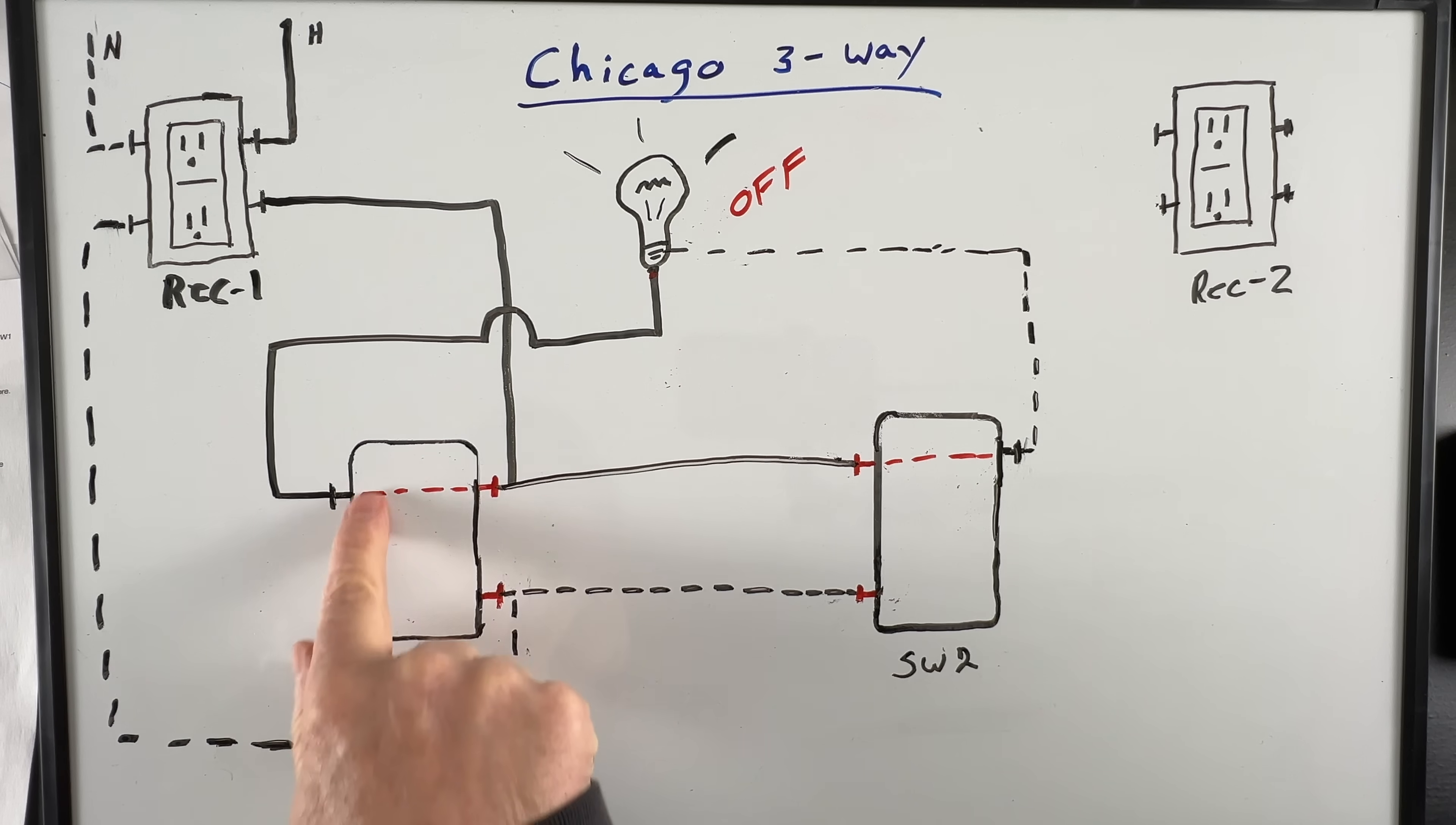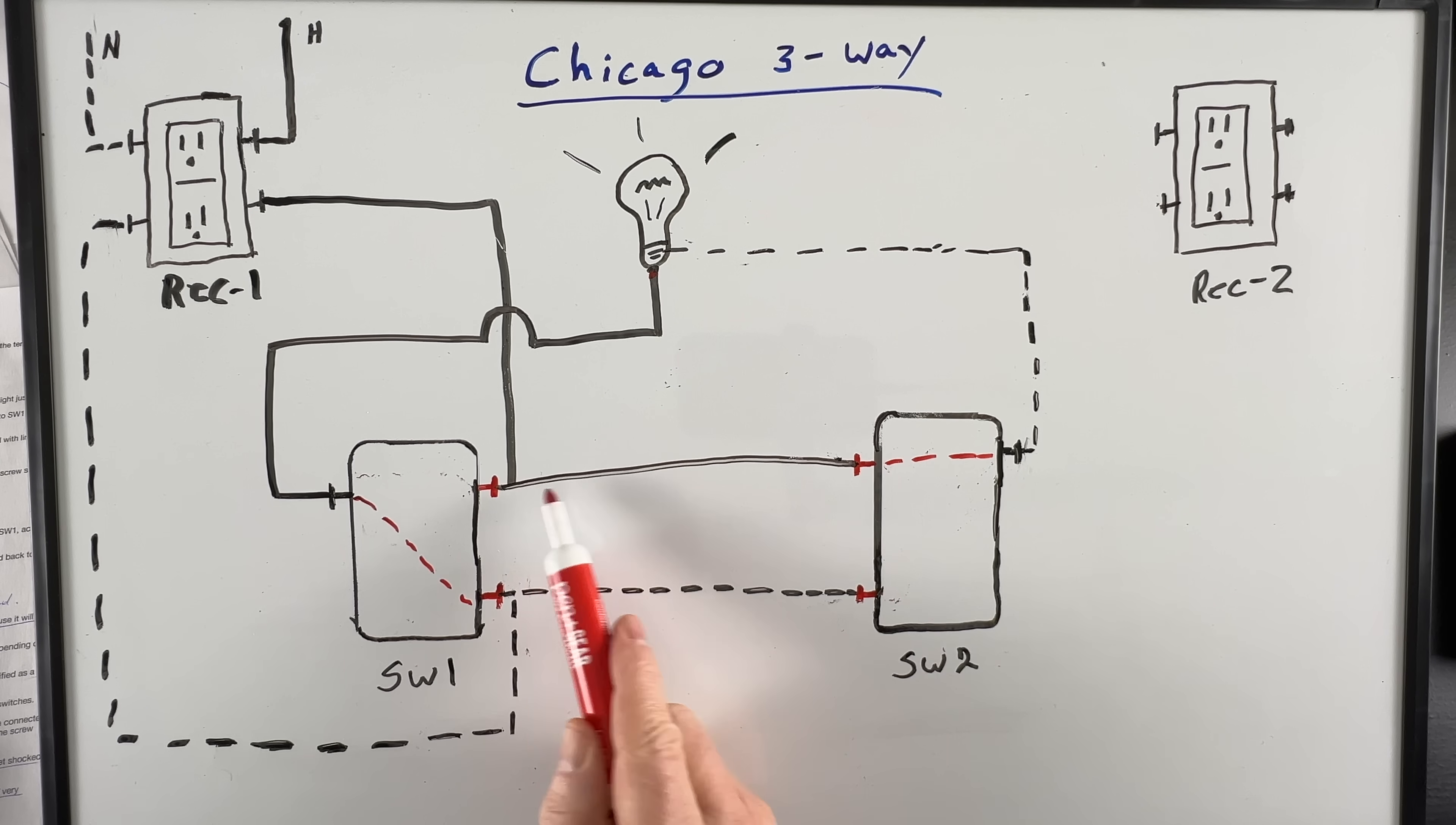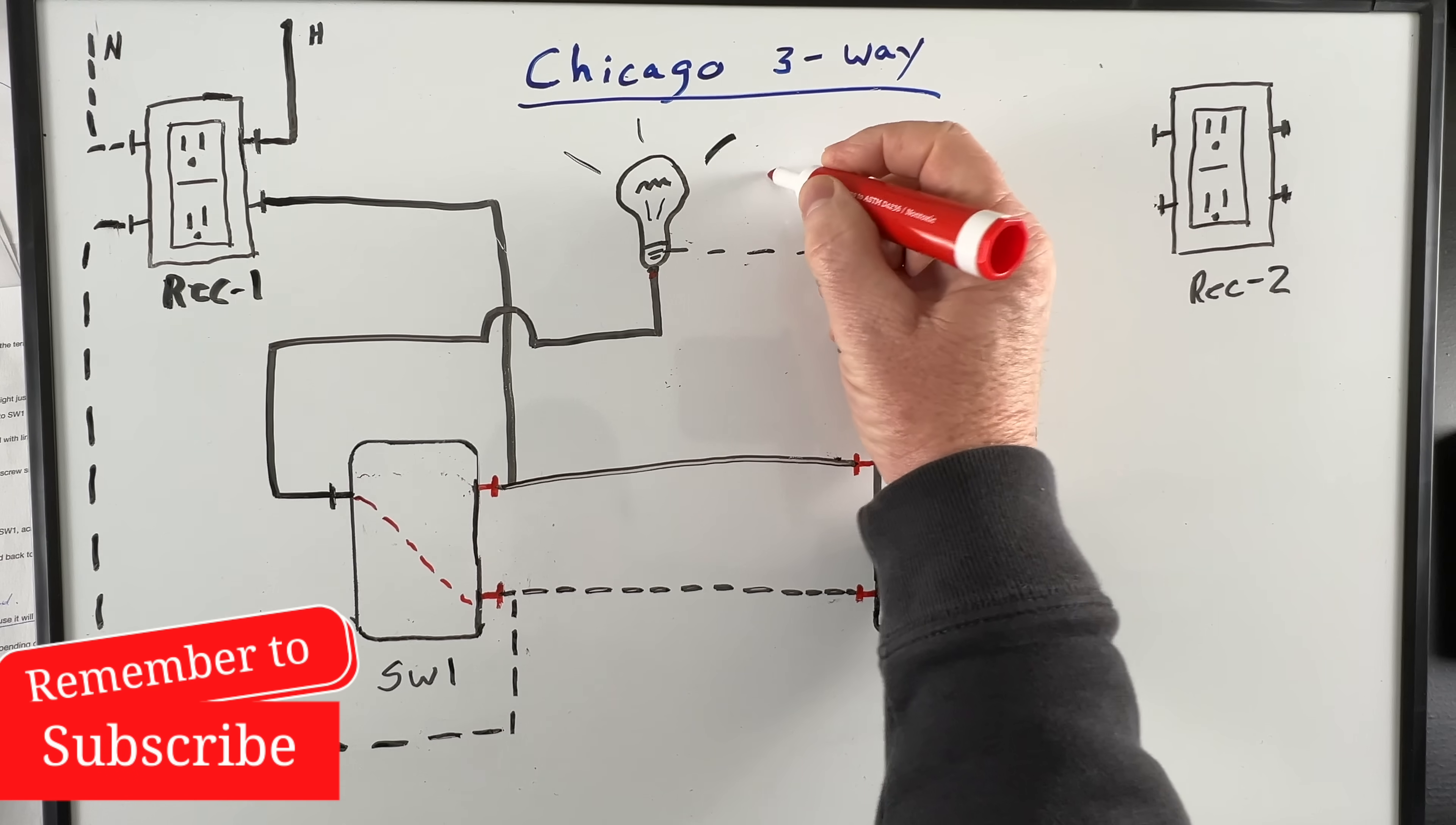Let's move switch one to the down position. Now our line power comes from receptacle one down to the traveler screw on switch one, across the traveler to the traveler screw on switch two, through switch two and then up to the neutral shell of the light. Our neutral return comes from the hot tab on the light down across to switch one, through switch one and then back to the source. This completes the circuit so again the light will be on.